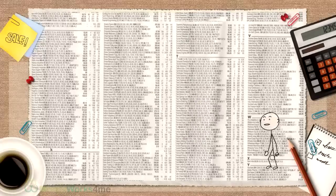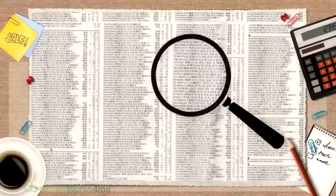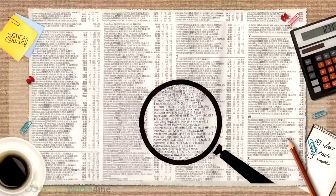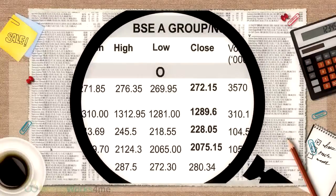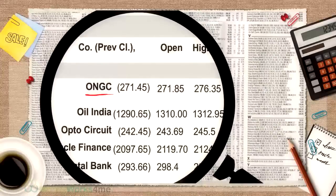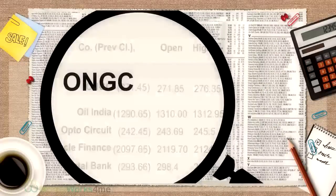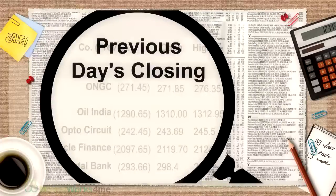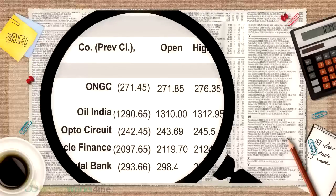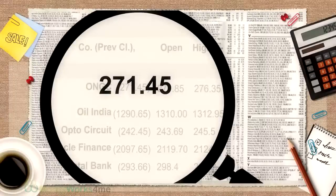The first thing you need to do is to find out which group your company's stock is in. You will find your company's stock in a table that may look like this. The company's name will appear on the left. In this case, it is ONGC. The figure appearing in brackets after the name is the previous day's closing or last traded price. In this case, it is Rs. 271.45.